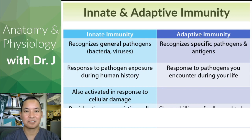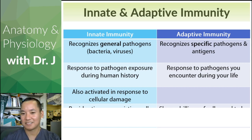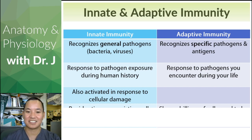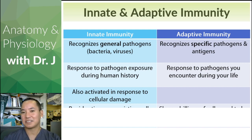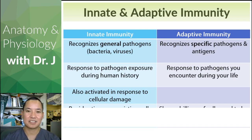Innate immunity also activates in response to cellular damage. Think of it like this: if someone drives a car through your wall, you're going to call the police. Or if someone runs over a fire hydrant and water is spewing everywhere, emergency services are going to come. Same idea — where there's smoke there's fire. If there's cellular damage, that means there's a good opportunity for pathogens to enter the body, which is why cellular damage also tends to activate your innate immune response.